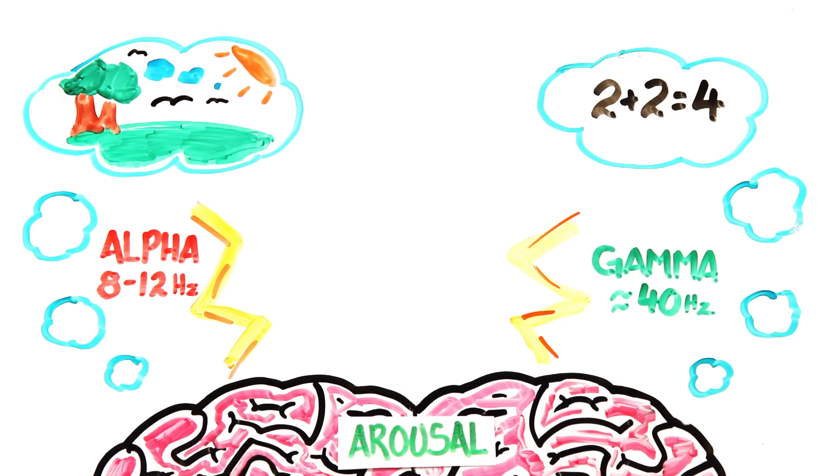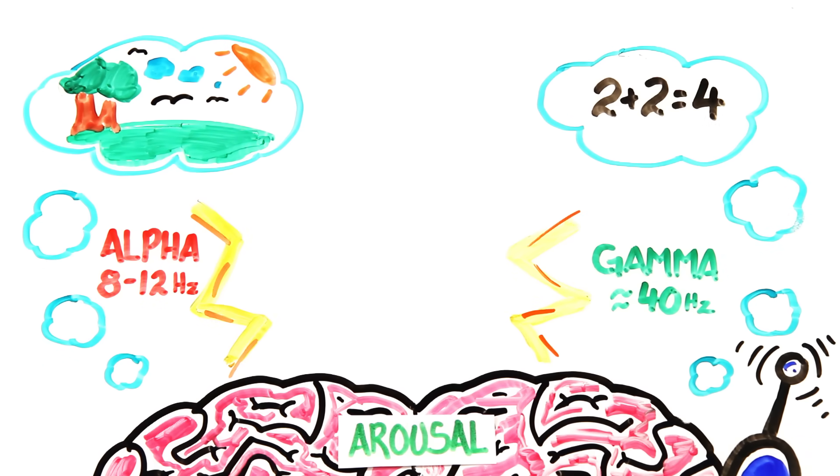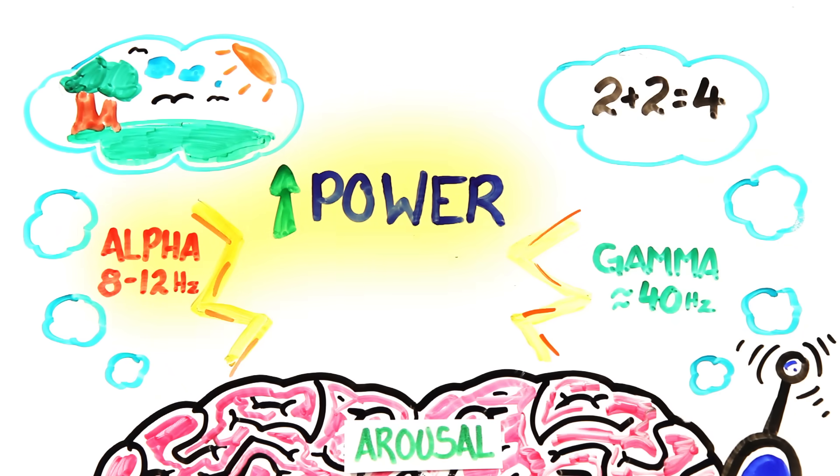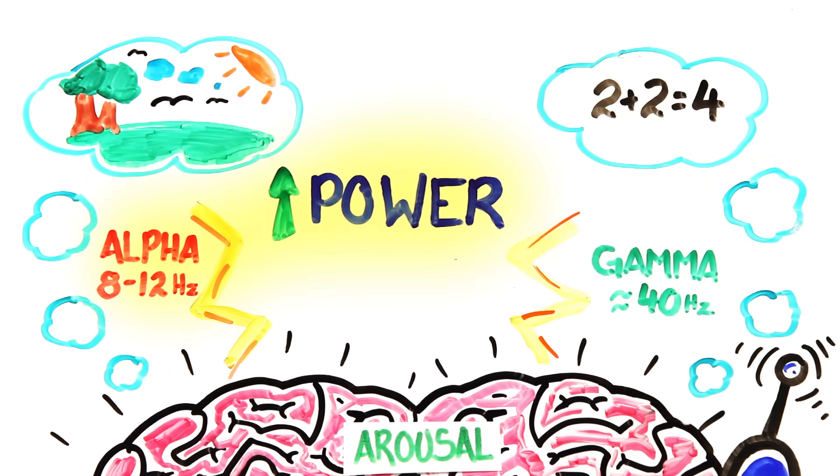And experiments have shown that when a cell phone is transmitting, say during a phone call, the power of these alpha waves is significantly boosted, meaning phone transmissions can literally change the way your brain functions.